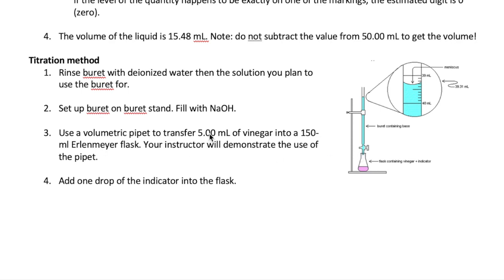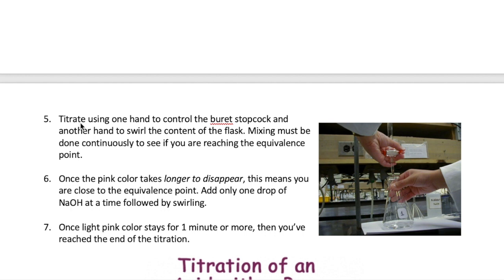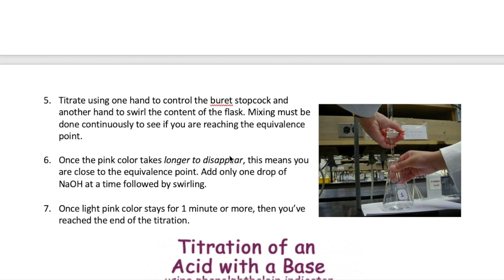Transfer five milliliters of vinegar into an Erlenmeyer flask and add phenolphthalein indicator. At the start, since the solution is acidic, it will be colorless. To titrate correctly, one hand holds the flask and the other controls the stopcock. Open the stopcock to let NaOH flow in while simultaneously swirling the flask to ensure mixing. Continuously swirl so the NaOH added is uniformly mixed with the rest of the vinegar.